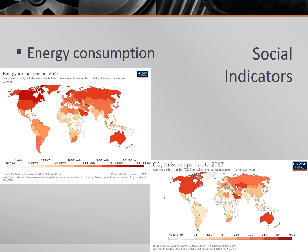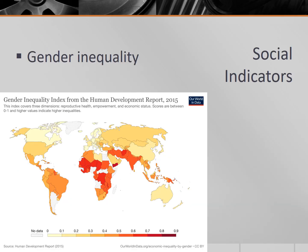There is a link between economic growth and energy consumption, meaning that as a country's development increases, their energy consumption goes up as well. And since much of the energy consumed now is non-renewable fossil fuels, there has also been an increase in per capita CO2 emissions. Finally, gender inequality tends to decline as countries develop, but this will be a topic of conversation in the next lecture.